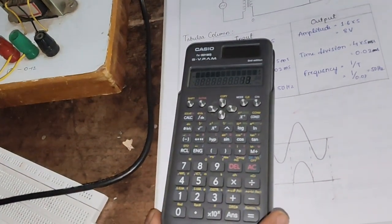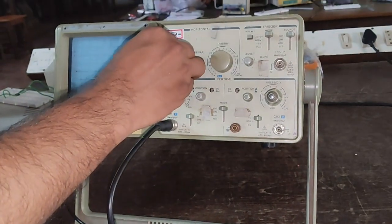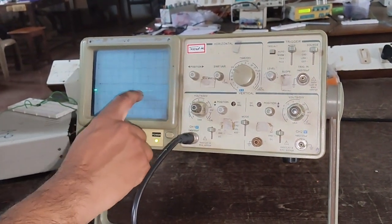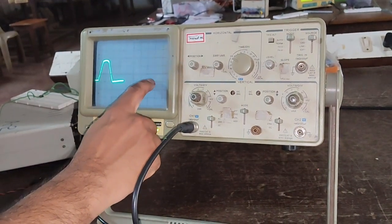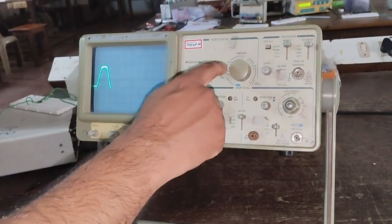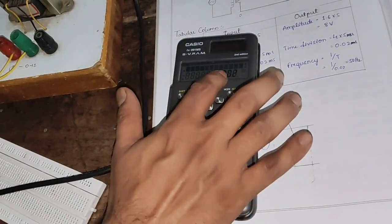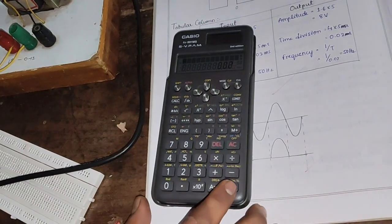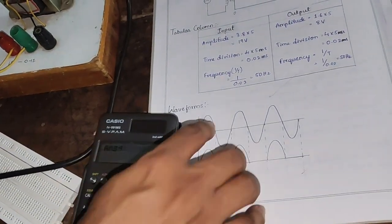For the frequency, we have to measure this positive half cycle as well as this blank line. That is 1, 2, 3, 4. Four into five millisecond, which is again 0.02 second. If I make one divided by this value, that is again 50 hertz. The same value we have noted here in the tabular column.